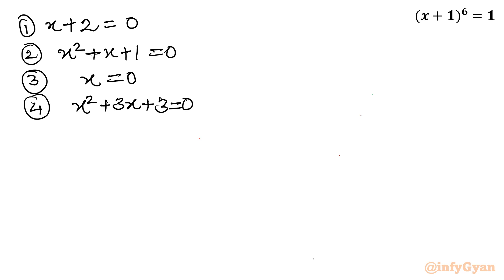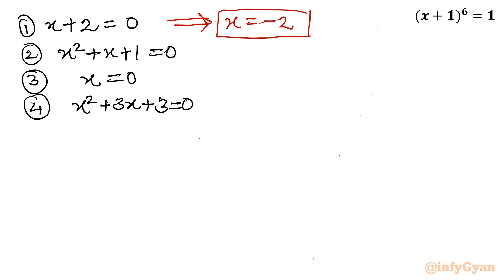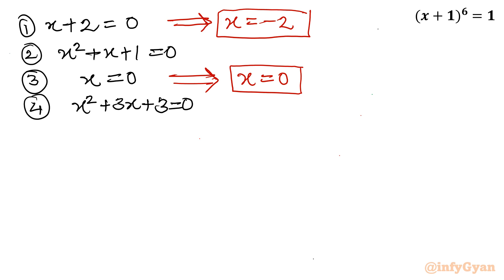We have to solve ultimately 4 equations. The first and third equations give straightforward solutions: x equals minus 2 and x equals 0. So minus 2 and 0 are 2 real solutions. Now let's solve the two quadratics, equation number 2 and equation number 4.